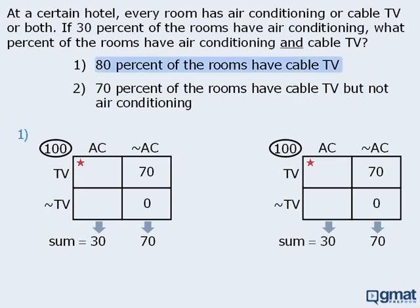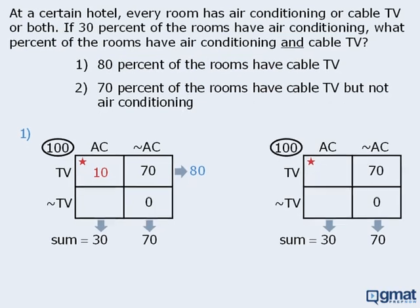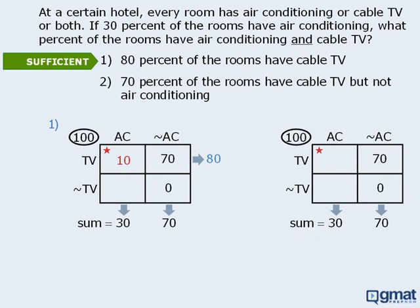Let's begin with statement 1. If 80% of the rooms have cable TV, then these two boxes must add to 80. Since one box already has 70 rooms, the other box must have 10 rooms. At this point we have found the value in the target box, so statement 1 is sufficient.